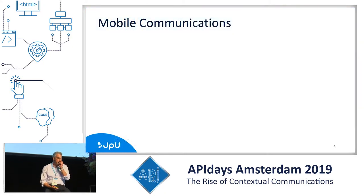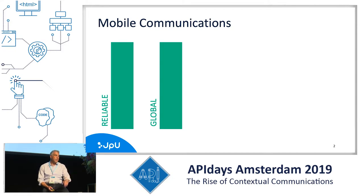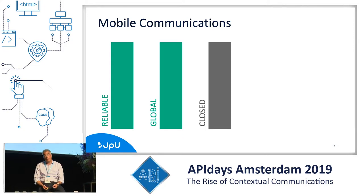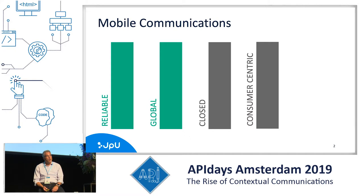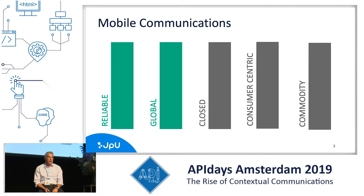What do we think about mobile communications today? When we think about mobile networks, we think of them as reliable to the point where we just assume our mobile phones are always going to work. Secondly, we think of them as global — it's a global service, perfect for IoT use cases such as transportation. Now, there are some downsides. They're typically closed. MNOs are very protective of them — they don't want you accessing the HLR, HSS, these type of things. They're consumer-centric: everything is bundles, consumer pricing models. And everything's a commodity; not a lot of customization for the developer community.